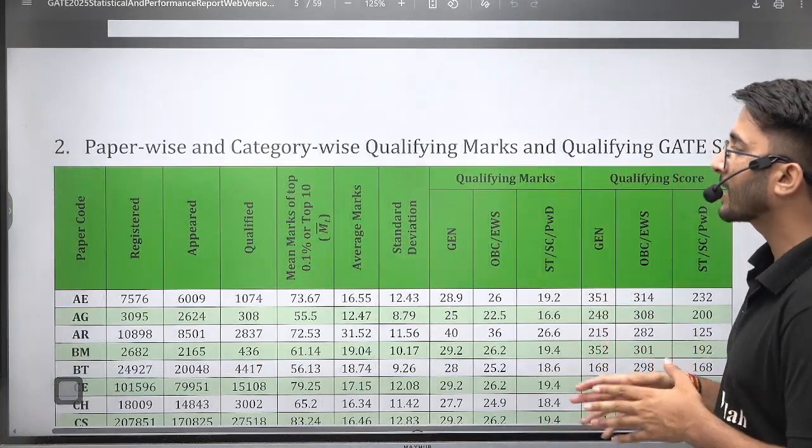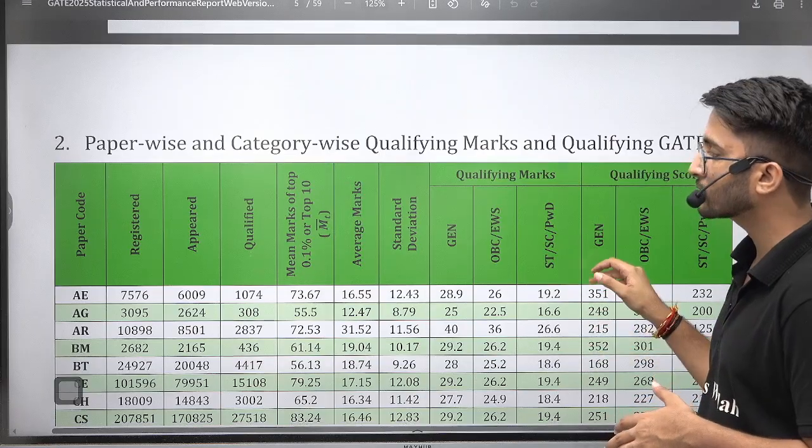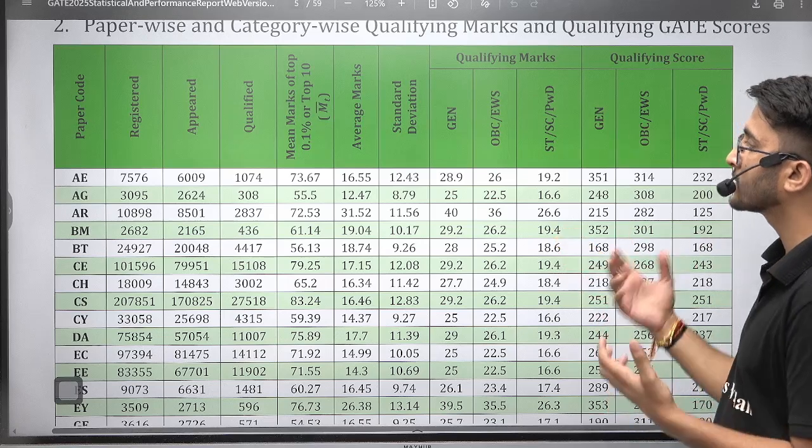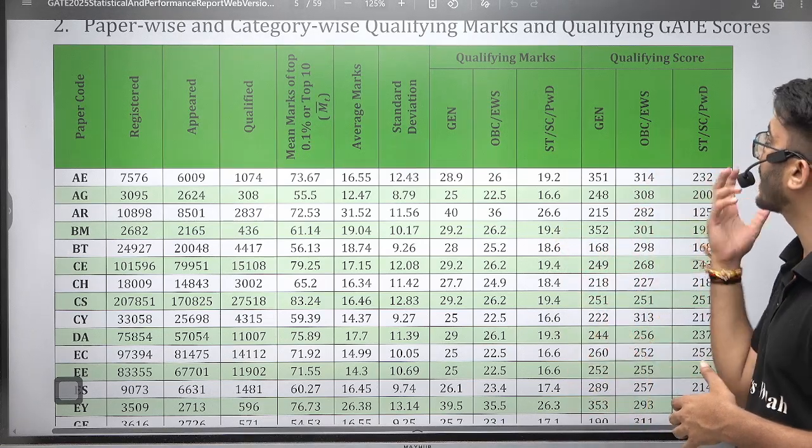If we talk about the first data, then they provided paper-wise, category-wise qualifying marks and qualifying GATE score. You can get an idea how many students registered in your branch, how many students appeared, how many students qualified, and the qualifying marks for the GATE 2025 exam.